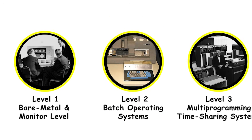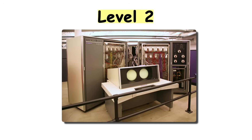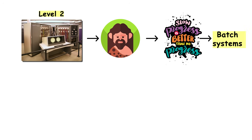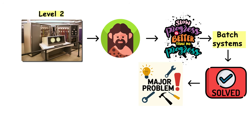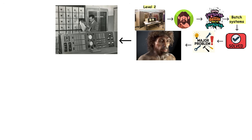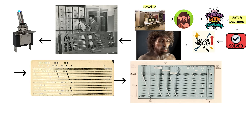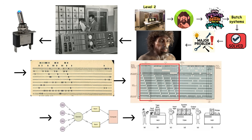Level 2: batch operating systems — slightly less terrible. Batch systems solved one major problem: the human bottleneck. Instead of having one programmer monopolize the computer flipping switches, operators would collect programs on punch cards, group them into batches, and feed them through sequentially.